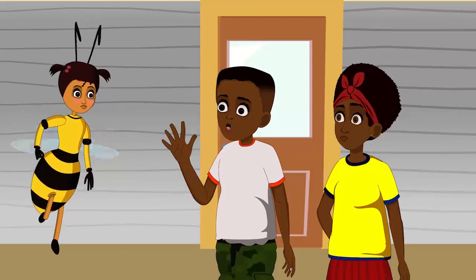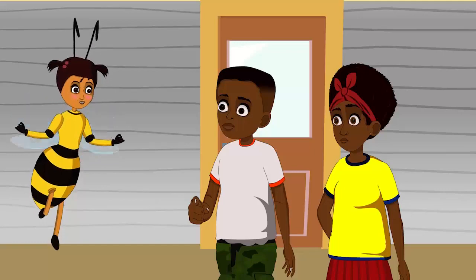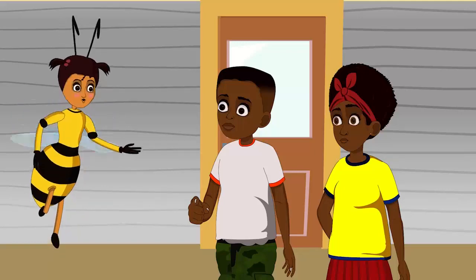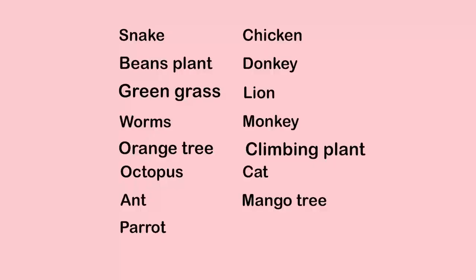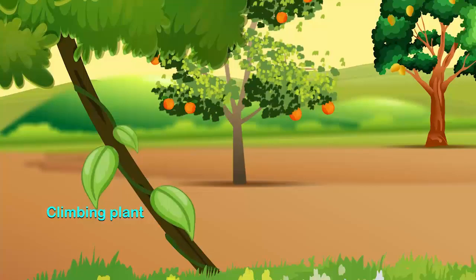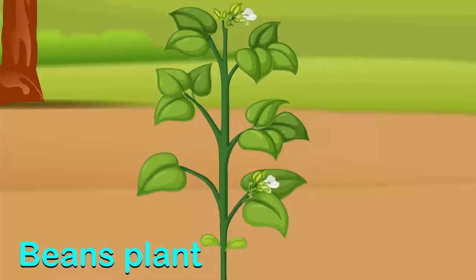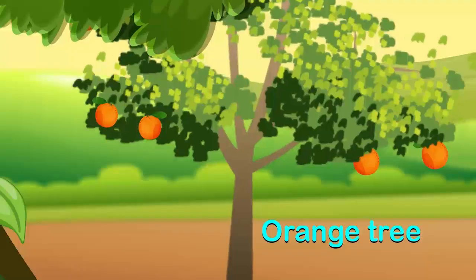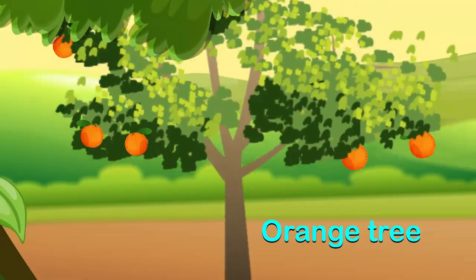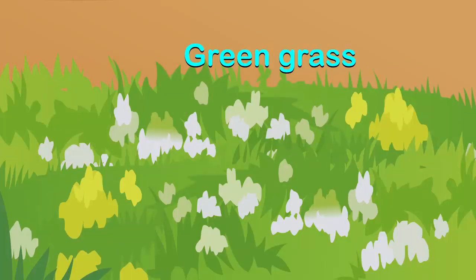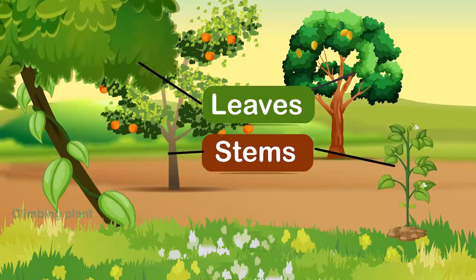Now that we know some of the life processes of living things, group the names of the living things on the TV screen into animals and plants. I'll group the plants: climbing plants, mango tree, beans plants, orange tree, green grass. They all have leaves, stems, and roots.